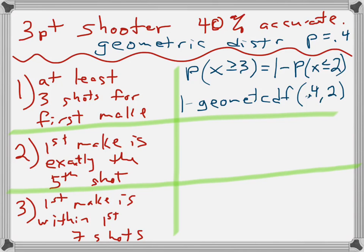The next problem is the probability that it takes exactly five shots. So, X equals five, which is geometric PDF because it's equals to, 0.4, 5.